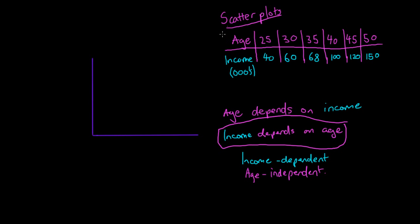Age will be our x, and income will be our y. We have our y-axis here, and this will be income. And we have our x-axis down here, so this will be age.